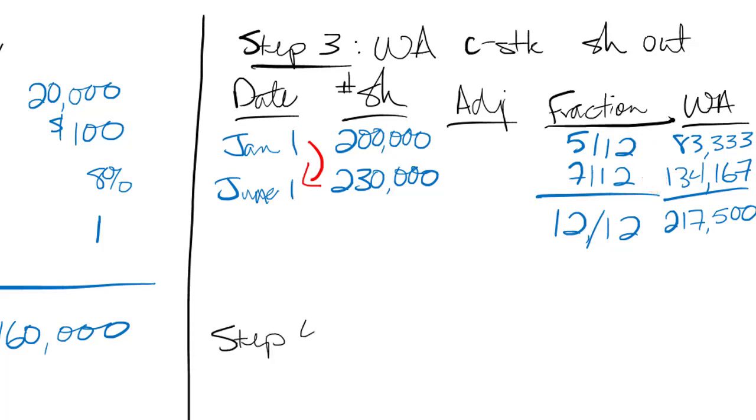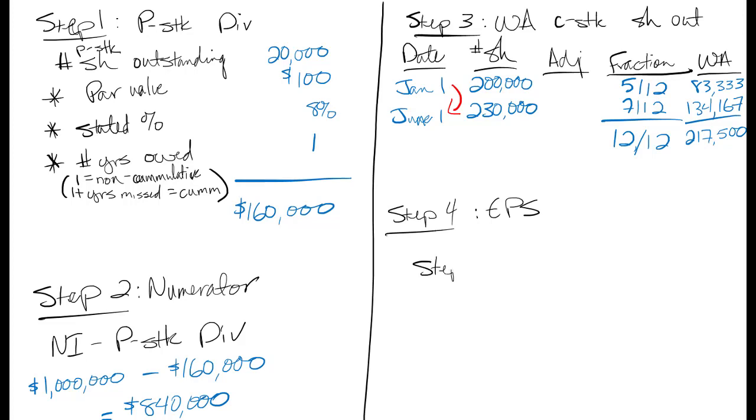Step four is to get my earnings per share. And that's going to be the step two number divided by the step three number. So step two, 840,000. Step three, 217,500. So I end up with earnings per share, $3.86. Not a bad number for this company.